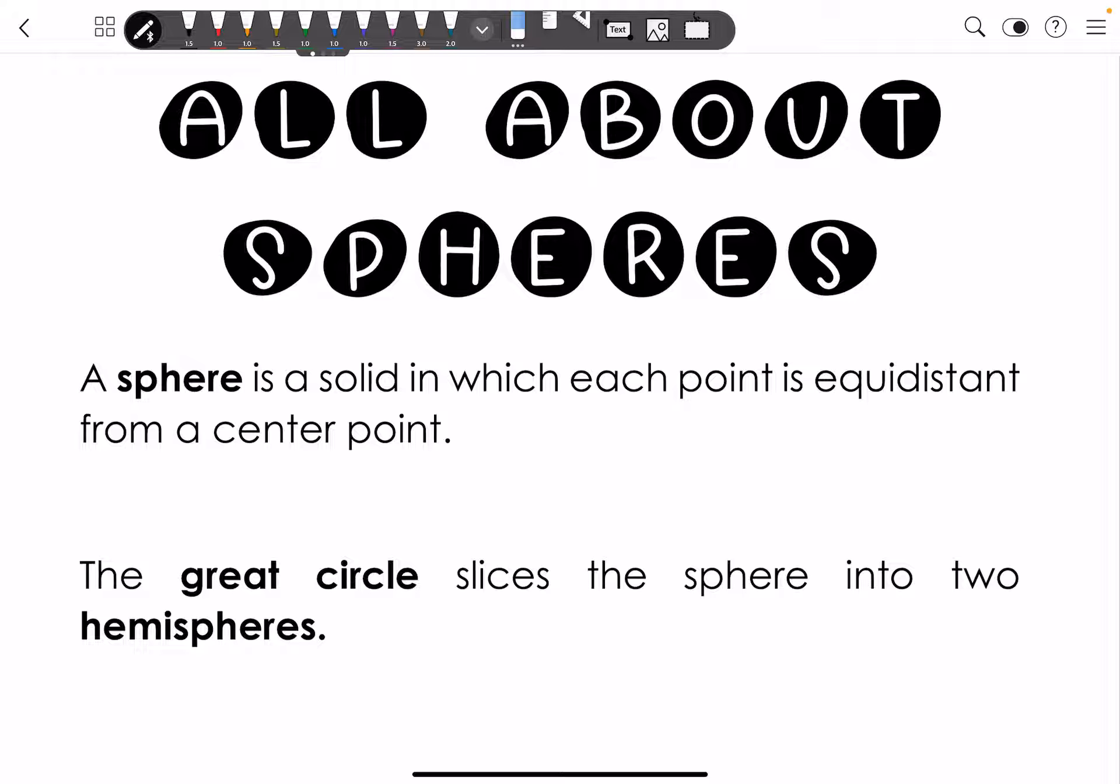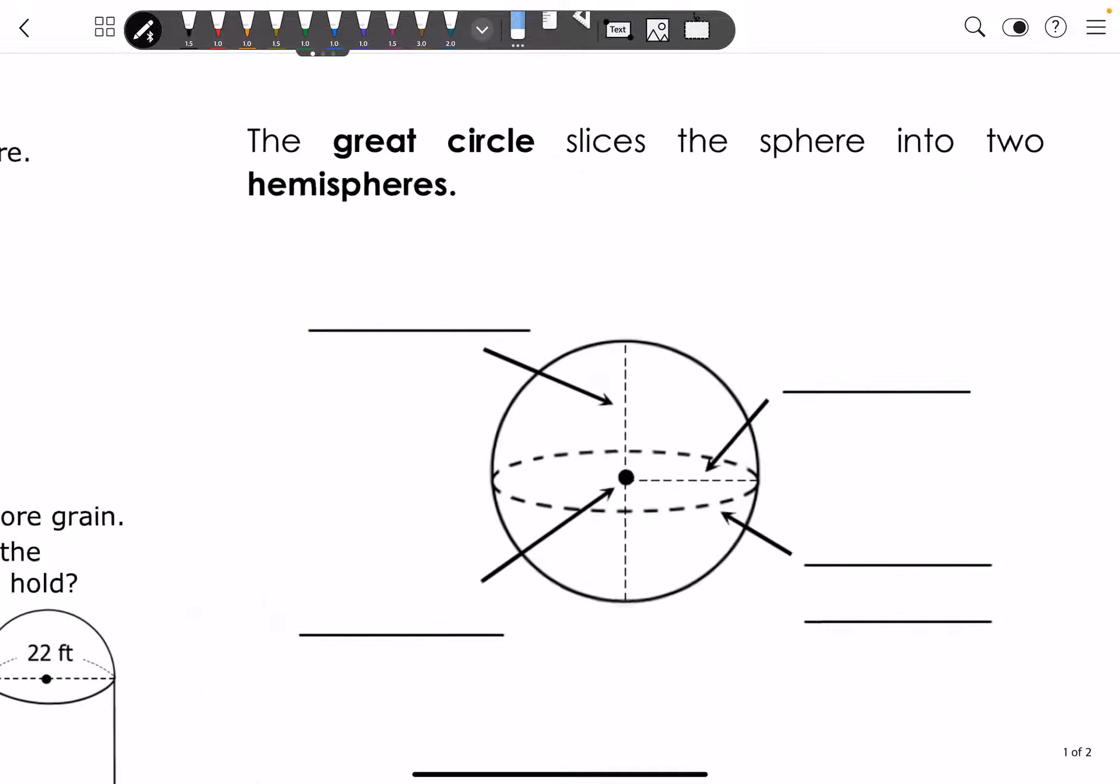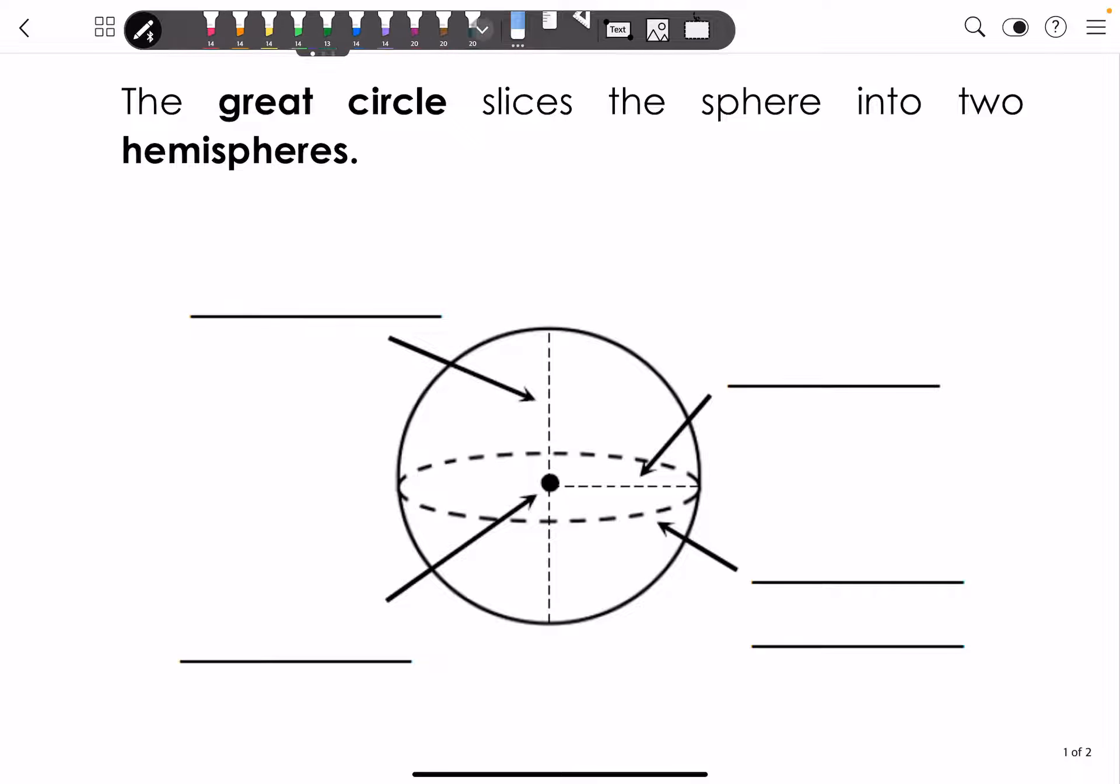I want to remind you that a sphere is a solid in which each point is equidistant from a center point. The great circle is going to slice the sphere into two hemispheres. So this part right here, that's going to be the great circle.